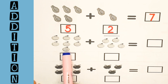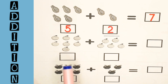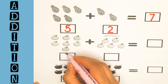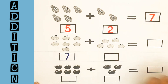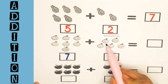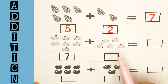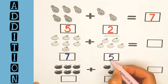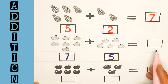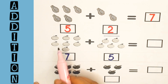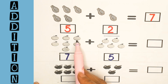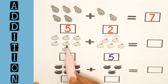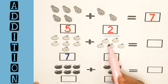Six, seven — here are seven oranges. And one, two, three, four, five — here are five oranges. Now we will count the total number of oranges: one, two, three, four, five, six, seven, eight, nine, ten, eleven.